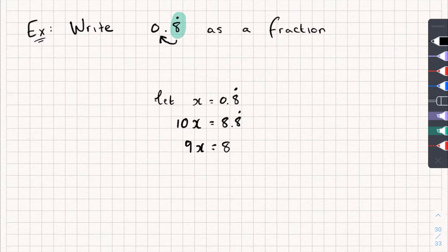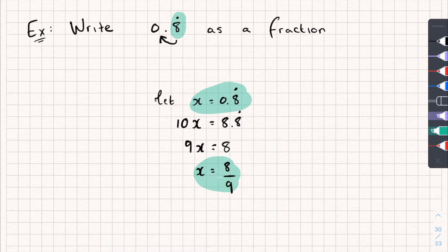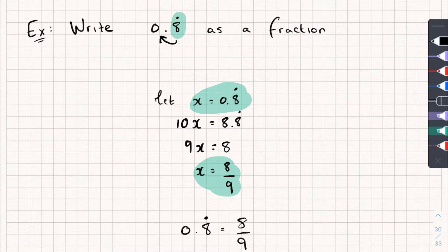From here, we want to get x on its own. So I could divide both sides by 9 and then I get x is equal to 8 over 9. Now, the reason this is useful is because earlier I said that x is equal to 0.8 recurring. And down here, I've got that x is also equal to 8 over 9, which is a fraction. So I've converted 0.8 recurring into a fraction that is 8 over 9. And that's it.